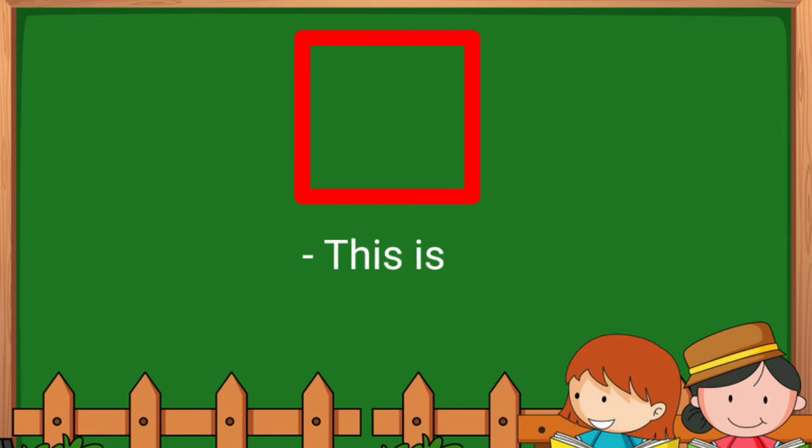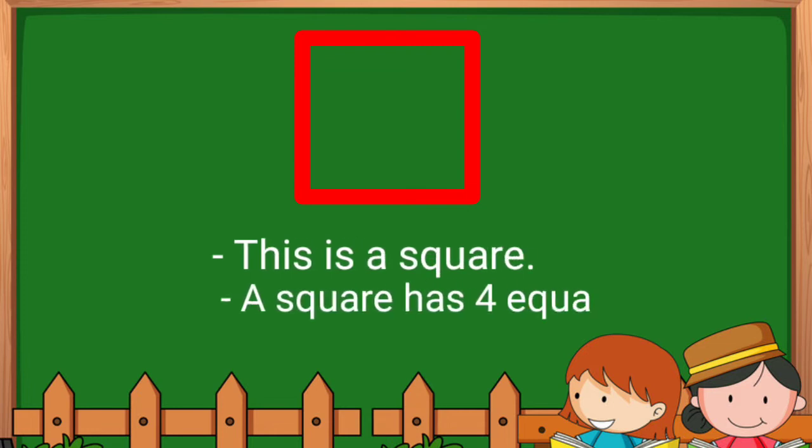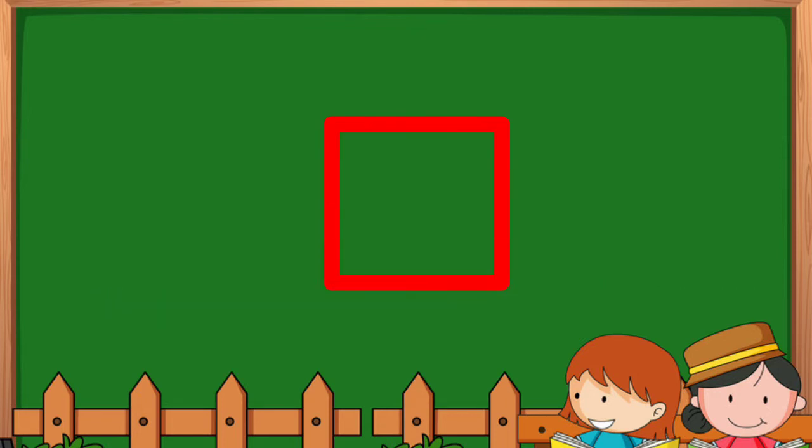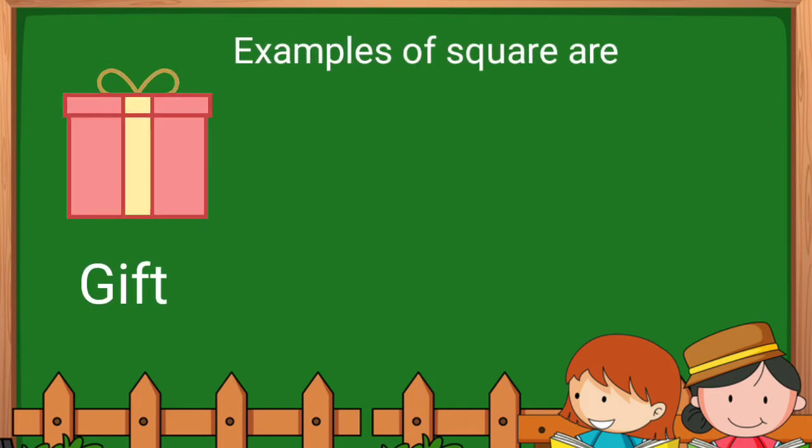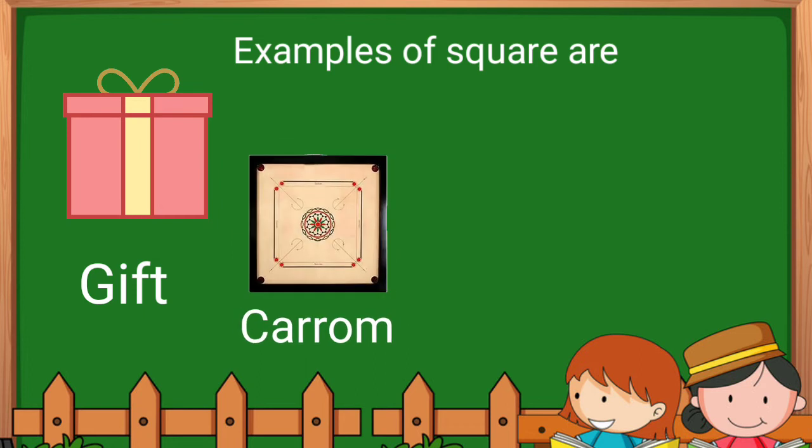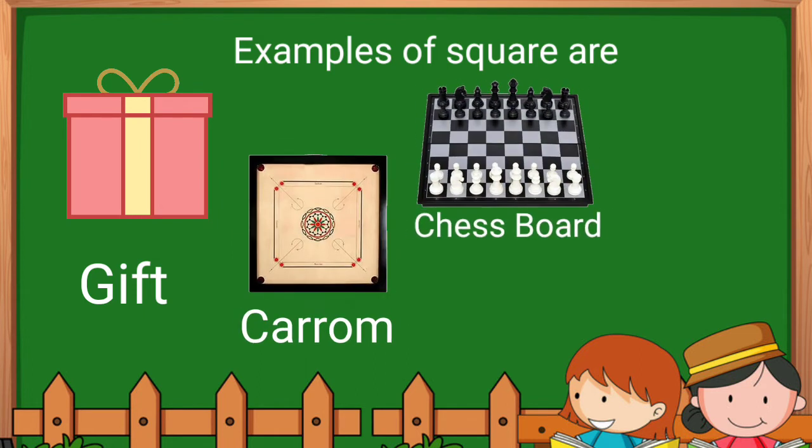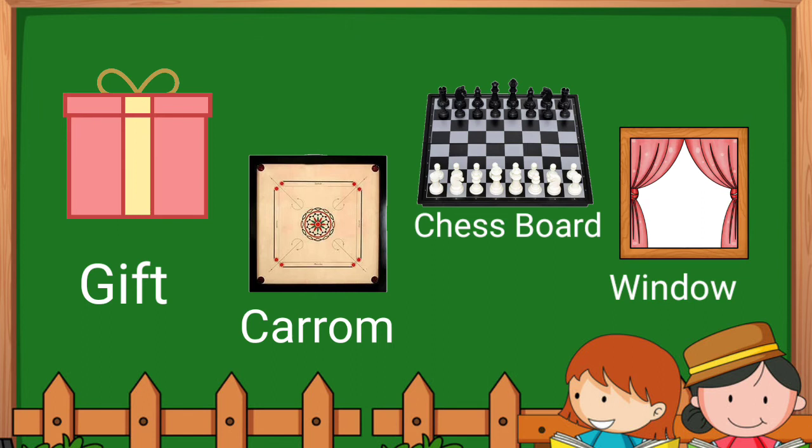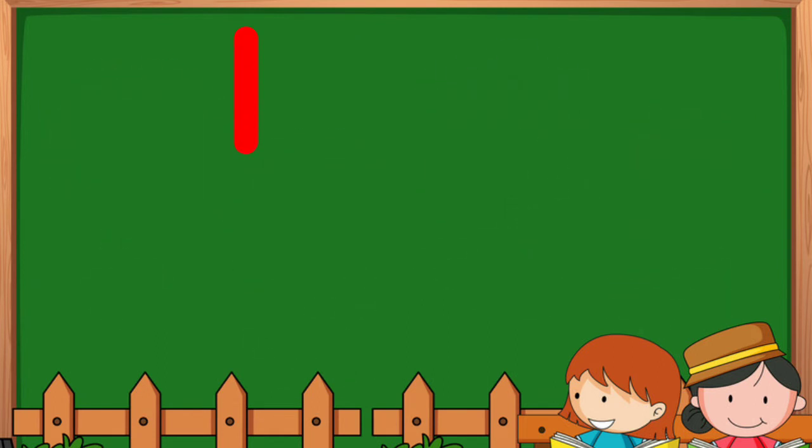Square. This is a square. A square has four equal sides and four corners. Let's count: one, two, three, four. Examples of square are gift, carom board, chessboard, window. These are all examples of square. Rectangle.